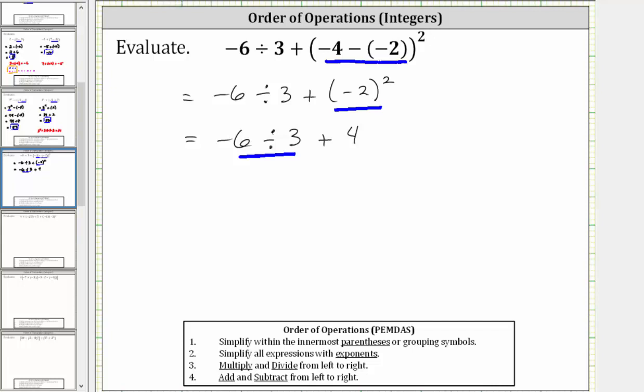Negative six divided by positive three is equal to negative two, giving us negative two plus positive four. Notice for this sum, the positive four is going to outweigh the negative two. Negative two plus positive four is equal to positive two.